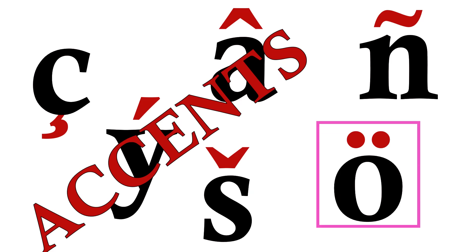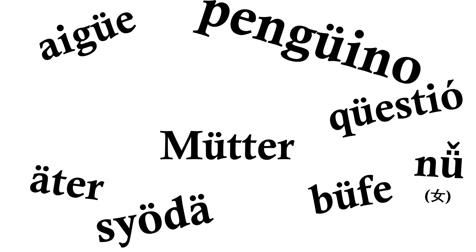One accent you've probably seen before is this one, where two dots appear over a vowel letter. You've got this in French, Spanish, Swedish, Finnish, Catalan, German, Turkish, Pinyin, even in English, though it's usually kind of optional there.